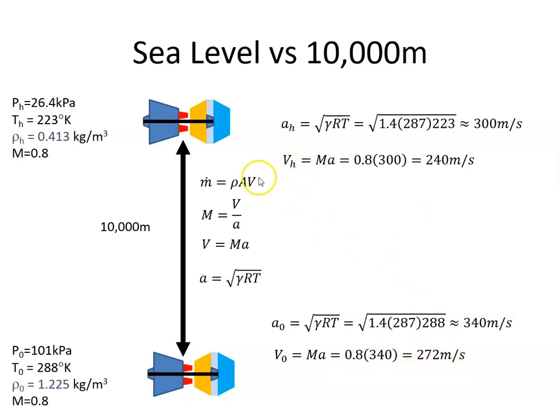Then we can use this value to calculate the mass flow, so it's the density times the cross-section area times the velocity. The density at altitude is 0.413, we're going to assume a cross-section area of 0.2, and 240 meters per second, so that gives me a mass flow of air through this engine of 20 kilograms per second. At sea level it is 67 kilograms per second.